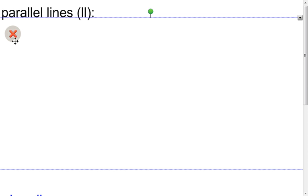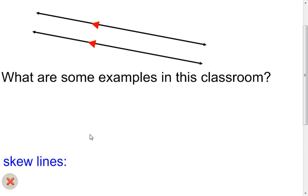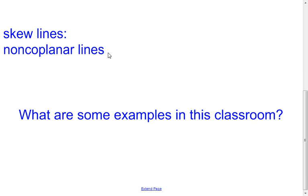Parallel lines — this is just a little review. Co-planar is an important piece of this, and these are lines that never intersect. Looking for parallel lines in the classroom: you can look at the lines on the floor — many of those are parallel. You can look at lines in the ceiling — they're parallel as well. Skew lines are the non-co-planar lines that never intersect. I always think of a line from the ceiling running north and south, and a line on the floor running east and west — that would be an example of skew lines.